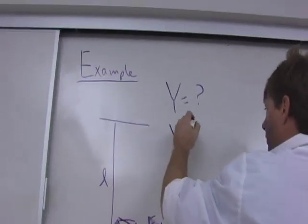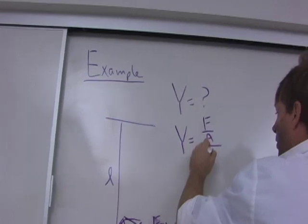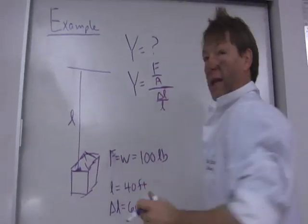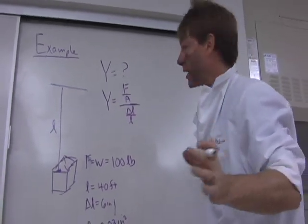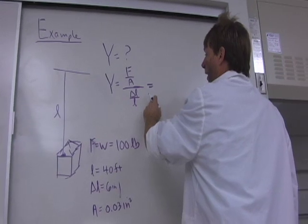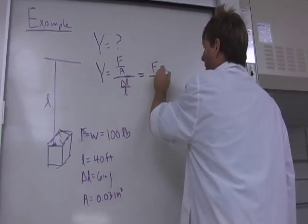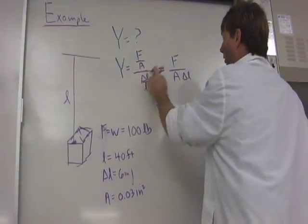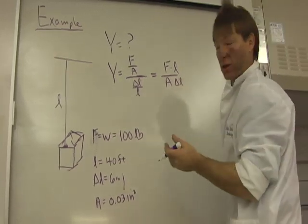Young's modulus is force over area over change in length over length. It seems better if we put this in two lines. So I can rewrite that as force on top, area on bottom, change in length on bottom. So 1 over 1 over length is length. That's an easier equation to work with.